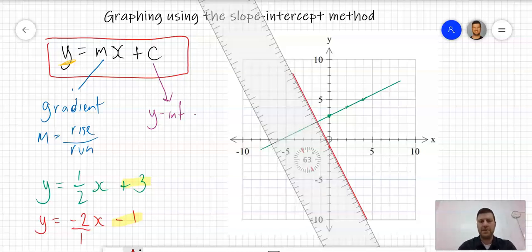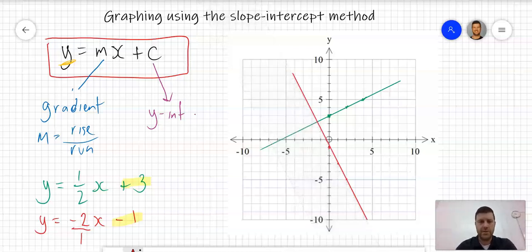That's pretty much it. The final step is usually just to label that line with the equation. In this case it's y equals minus 2x minus 1, and the green line had the equation y equals 1 over 2x plus 3.